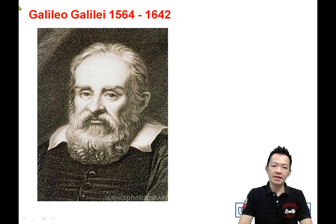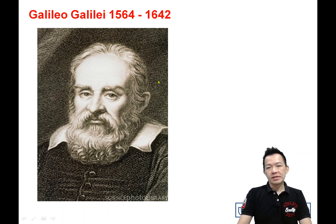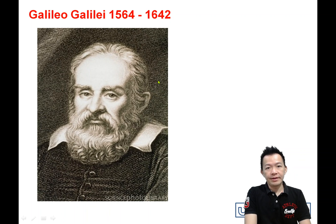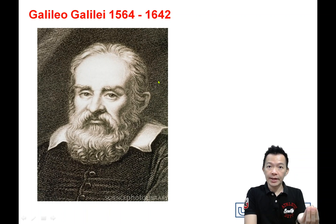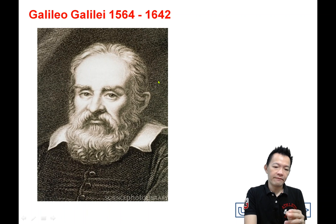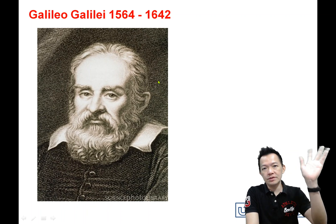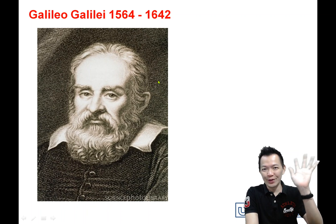This was the first time humans used science and mathematics to prove that the sun is the center of the solar system. But the problem is nobody believed him. So this is Copernicus — the sun is at the center of the solar system. Next, we have Galileo. The video is too long, so we'll continue Galileo's story in the next video. It will be easier for me to upload.